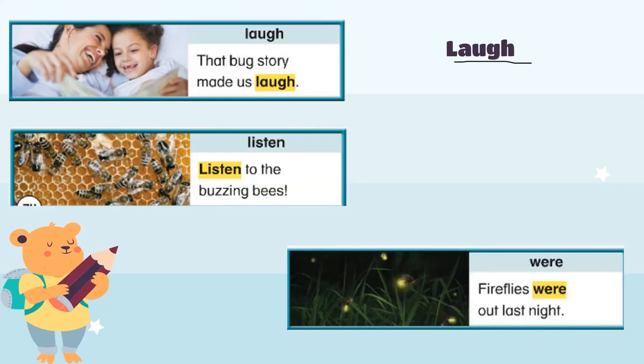Word number five is 'listen.' Listen to the buzzing bees. Can you see the bees in the picture? They are buzzing — making the buzz sound. Listen to the buzzing bees. Listen carefully. The last word is 'were.' Can you see the fireflies in the picture?